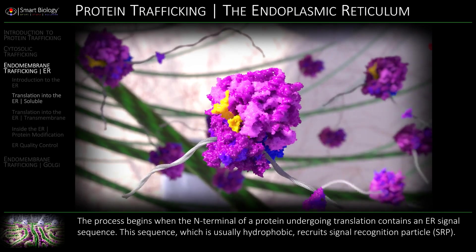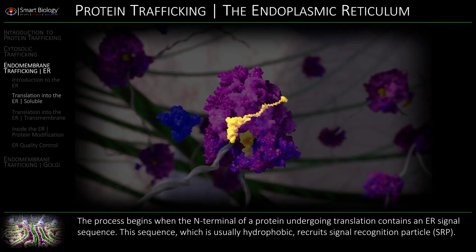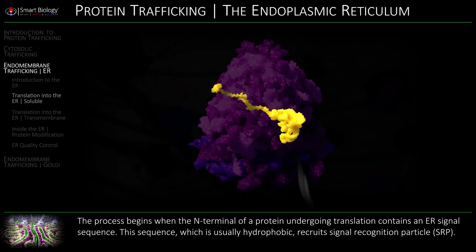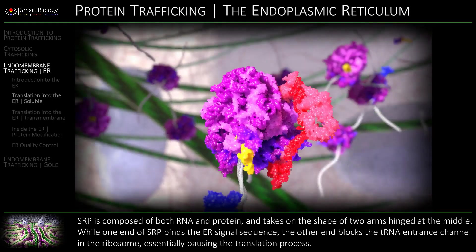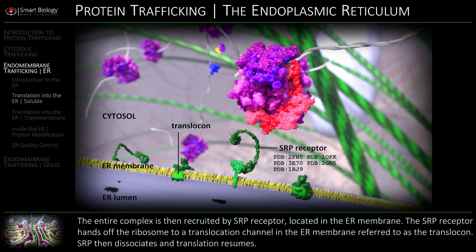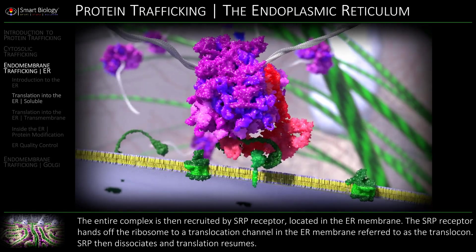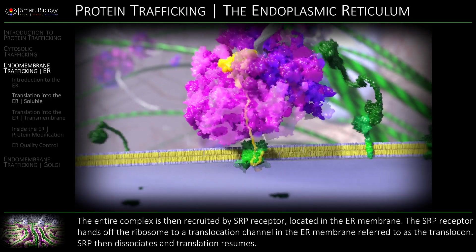The process begins when the end terminal of a protein undergoing translation blocks the tRNA entrance channel in the ribosome, the translocon. And translation resumes.